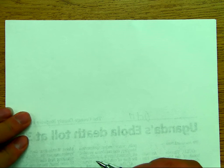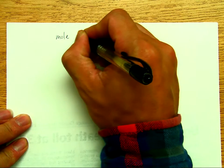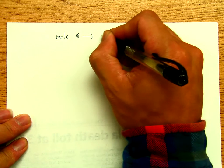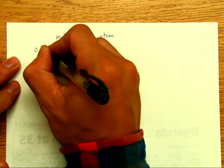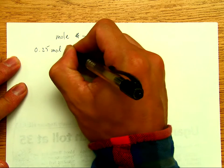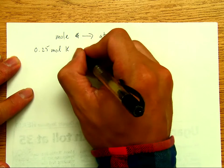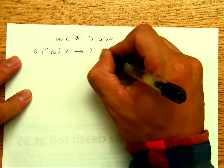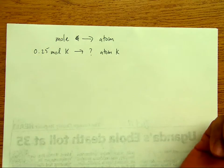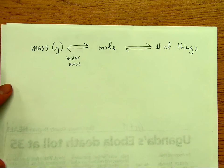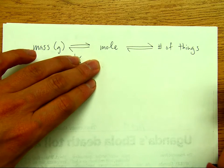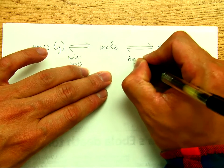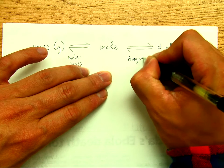Okay, so in these examples we'll convert from mole to atoms. In the first example, we have 0.25 mole of K, which is potassium, and we'll convert that into atoms of potassium. If we look at our concept map, we start with mole. To convert from mole to number of things such as atoms or molecules, we have to use Avogadro's number.